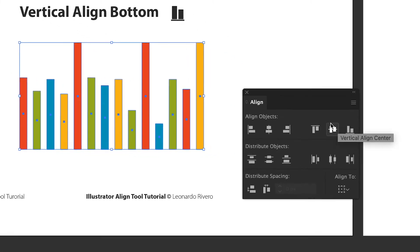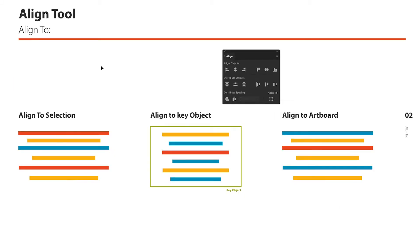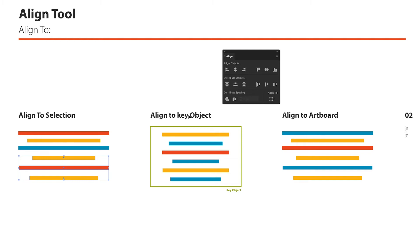One thing I haven't mentioned about the Align Tools panel is this option right here. Not many people know much about this option, but it's really powerful. I created this presentation so you can see how the three modes work: align to selection, align to a key object, and align to an artboard. Let's start with align to selection — if I take the element and click align to selection, it just aligns the elements within the selection. I can align this to the left and to the right and they're only going to align within the selection.